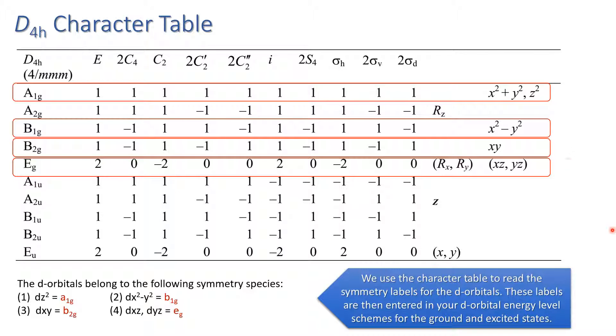We then determine the symmetry labels for the d orbitals and we use the D4h character table to do it. So here for example is the necessary function for dz² and this symmetry label is a1g. Summarizing, the dz² orbital has got a symmetry label of a1g, dx²-y² is b1g, dxy is b2g, and dxz and dyz are degenerate and have the symmetry label eg. Notice that we use small letters to designate symmetry labels for d orbitals.